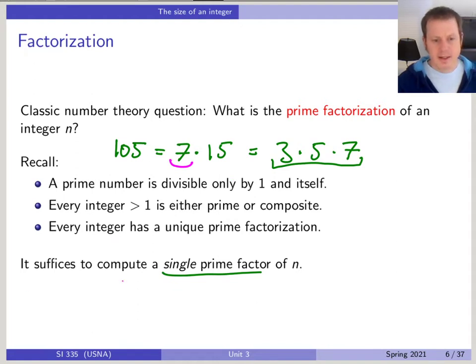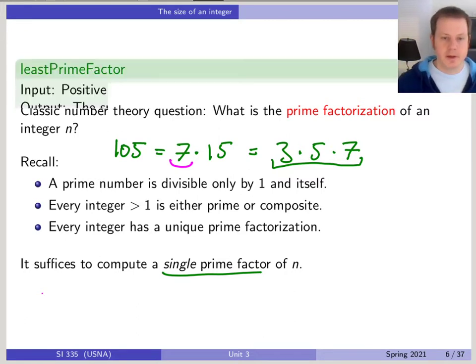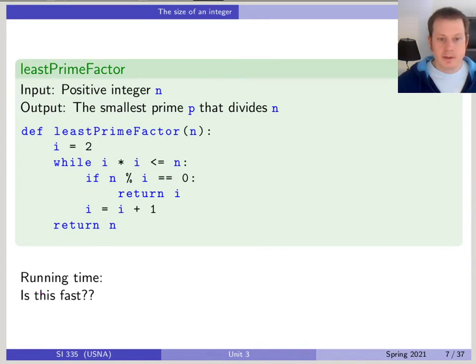And then you could factor 35 into five times seven. So the question is, given a number, we want to compute a prime factor of that number. So given 105, you want to compute one factor of it, like three. And this is an algorithm that will do that.